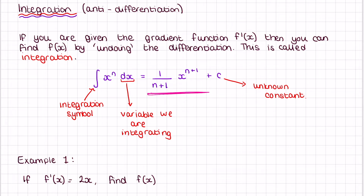The reason we have to add c is: when we take the derivative of a function that has a constant on its own — say 4 at the end — when we differentiate that, it just disappears. So when we're doing the integration, we don't actually know if there was a constant there or not. We add plus c to represent there could be a constant that we may not know about at this stage. Let's do some examples for practice.